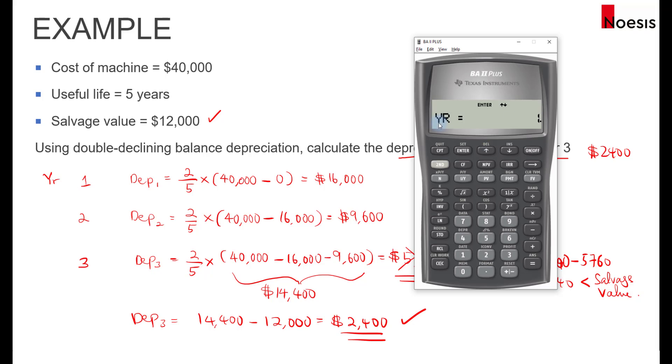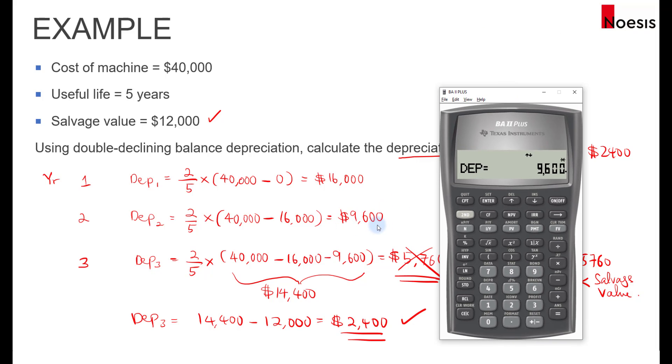If I scroll back up again to year, I can change this to two and press enter. Scroll down, the depreciation expense is 9,600. And the remaining book value is now 14,400, which we expect. We have calculated this just now. This is at the end of year two. And then there's another 2,400 more to depreciate.